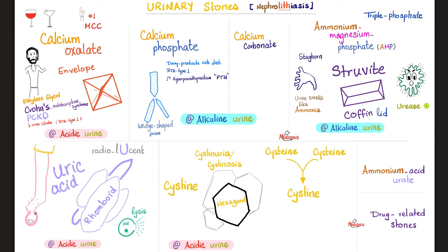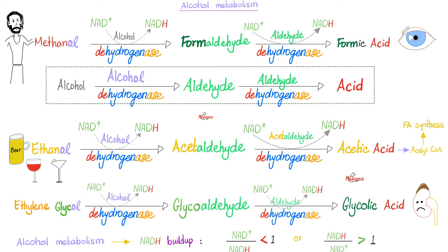Cystine kidney stones: recall from biochemistry that cysteine plus cysteine — two amino acids — combine to give cystine. Cystine in the urine increases the risk of cystine kidney stones. You can call this hereditary cystinuria or cystinosis — it's an inborn error of metabolism, specifically amino acid metabolism, and also a lysosomal storage disease. Ethylene glycol intoxication produces glycolic acid, which is very bad for the kidney and increases the risk of calcium oxalate stones.